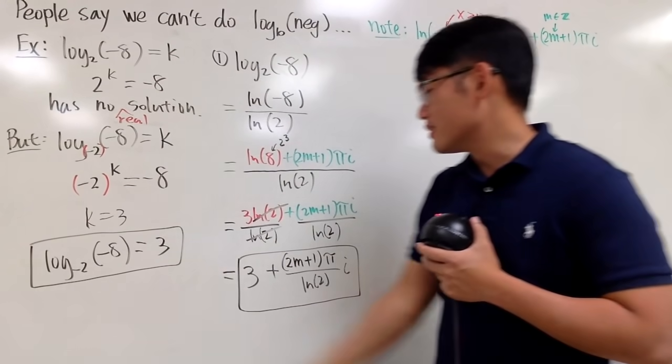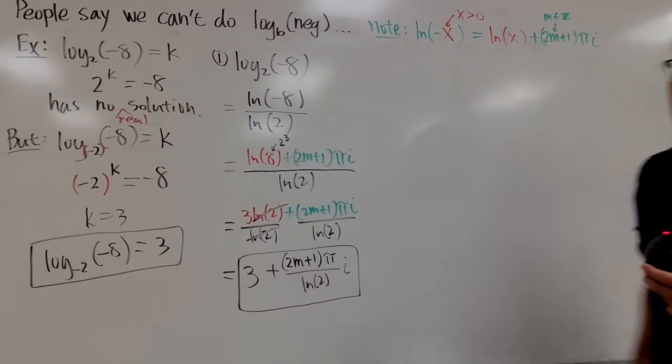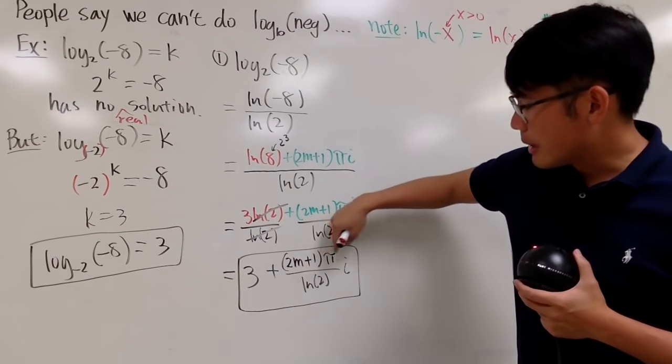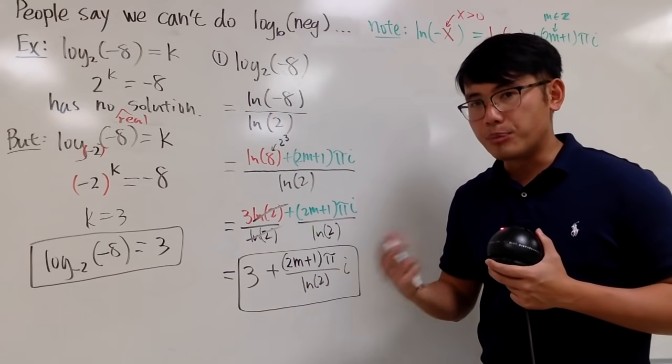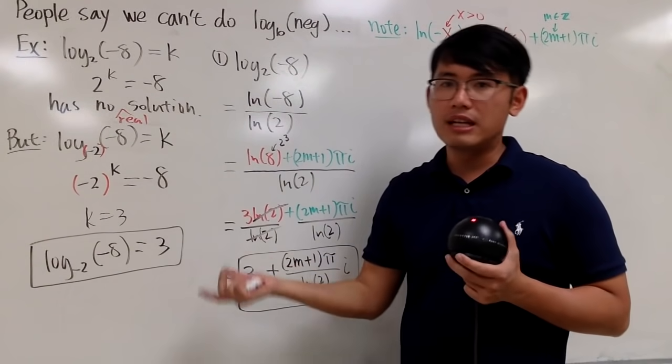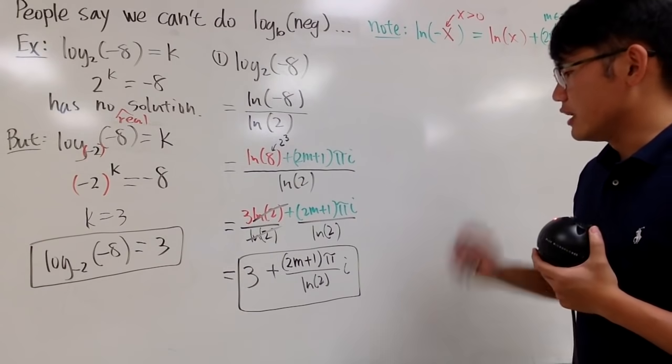So, this is the solutions for that. And the reason I said this is the solution is because m can be any integer. If you let m to be 0, then you are just talking about pi i over ln 2. You are just talking about the principal value. It's kind of like the first answer for that. That's pretty much the idea. So, this is it.